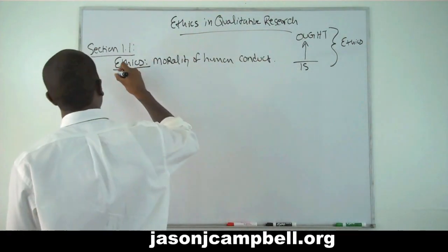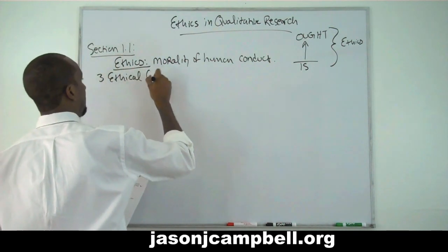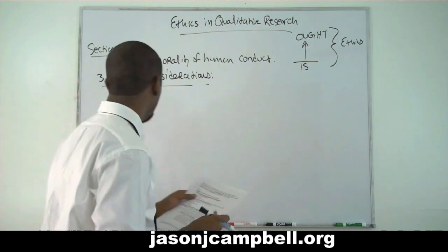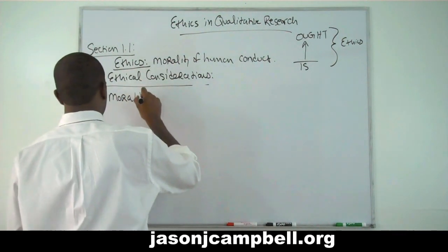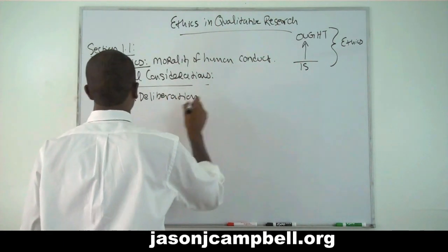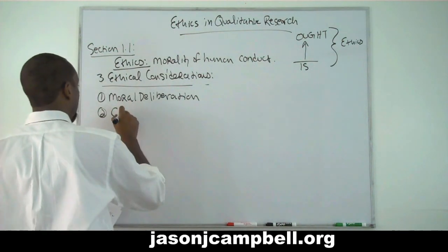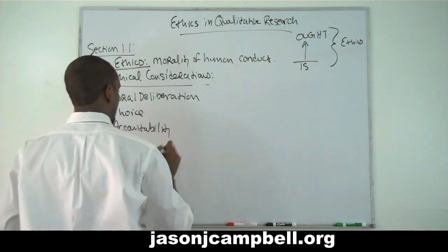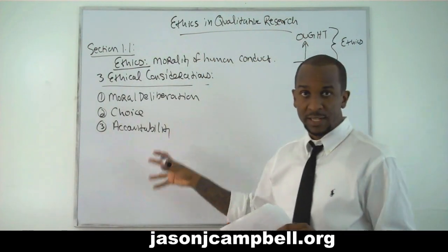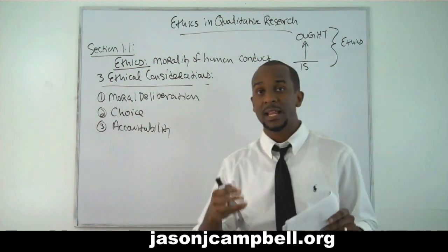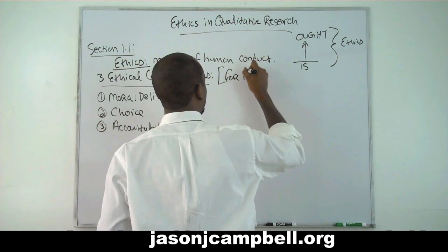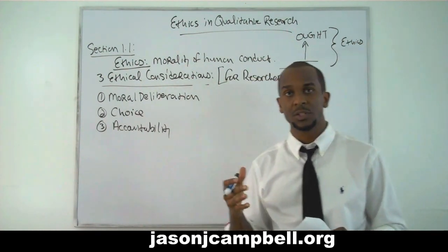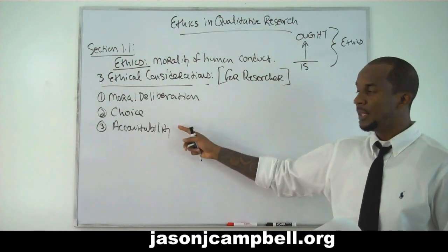Three ethical considerations for social scientists — in no particular order and not exhaustive. As a researcher conducting qualitative methods research: one, moral deliberation; two, choice; and three, accountability.